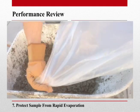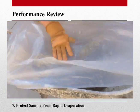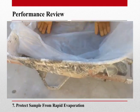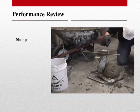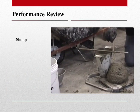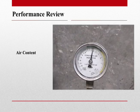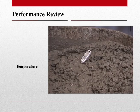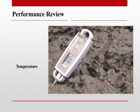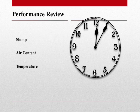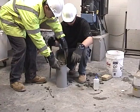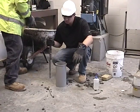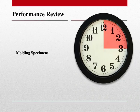After recombining our sample, we want to take steps to protect it from rapid evaporation and or contamination. We now want to begin our slump tests as well as our air tests and temperature readings all within five minutes. The molding of strength specimens must begin within 15 minutes.